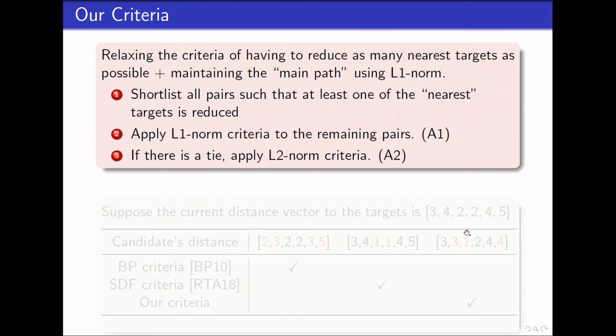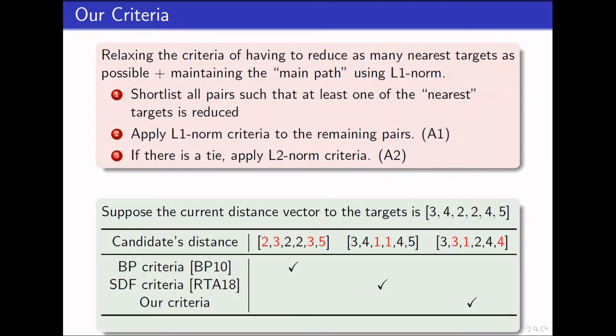In this paper, we introduce a new criteria that is a relaxed combination of the previous two criteria discussed. First, we shortlist all the elements such that at least one of the nearest target is reduced. Next, like BP, we apply the L1 norm criteria to the remaining elements. Then, if there is a tie, we will apply the L2 norm criteria.